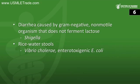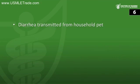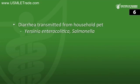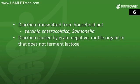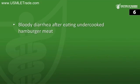Diarrhea caused by an S-shaped organism? That's Campylobacter. Diarrhea transmitted from a household pet? Two gram-negative rods fit here — it could be either Yersinia enterocolitica or Salmonella; remember Salmonella from reptiles. Diarrhea caused by a gram-negative motile organism that does not ferment lactose? That's Salmonella. The most common cause of traveler's diarrhea? Enterotoxigenic E. coli. Bloody diarrhea from eating undercooked hamburger meat? E. coli O157:H7.